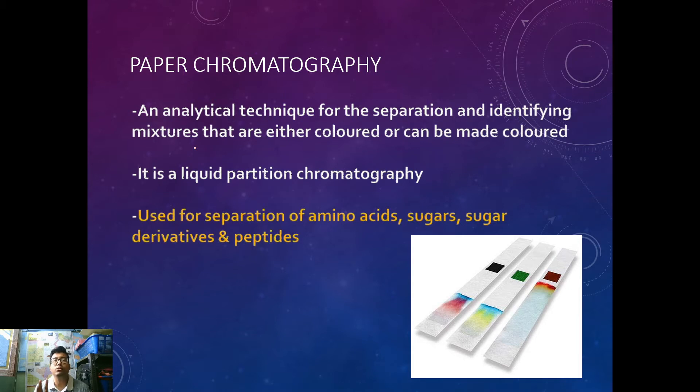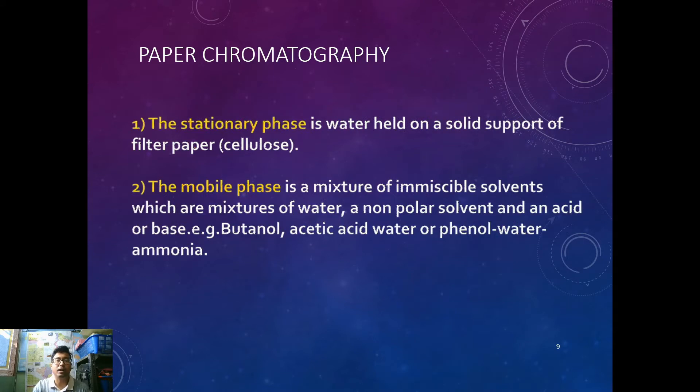It's a variety of liquid partition chromatography. It can be used in separation of anything that is detectable and having a color reaction. So amino acid, even carbohydrates, sugars and sugar derivatives. Remember, a complex mixture of carbohydrates can also be separated by paper chromatography. The stationary phase is filter paper made up of cellulose acetate. Cellulose acetate paper is the key ingredient of paper chromatography.